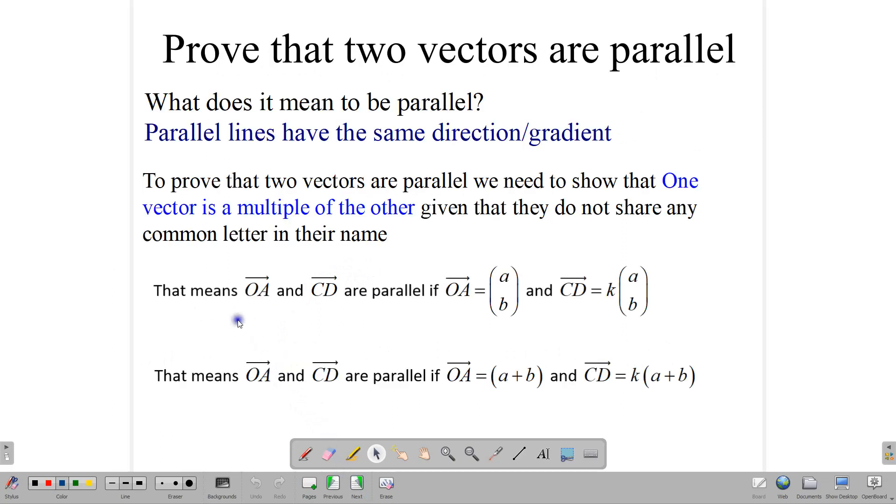Before we start looking at questions, we need to ask ourselves, what does it mean to be parallel? Parallel lines move in the same direction and they don't meet. Parallel lines have the same direction or the same gradient. And when it comes to vectors, to prove that two vectors are parallel, we need to show that one vector is a multiple of the other. That is, if you take a number and multiply it by one vector, you will get the other vector. So to prove that two vectors are parallel, we show that one vector is a multiple of the other, given that they do not have any letters in common in their names.